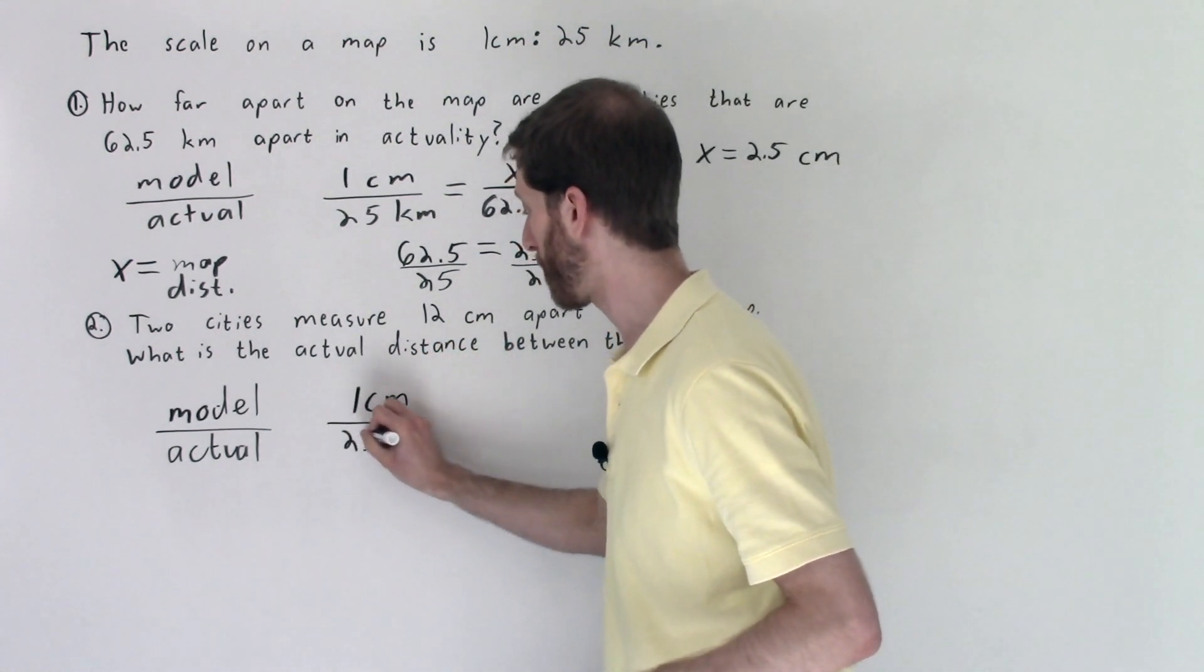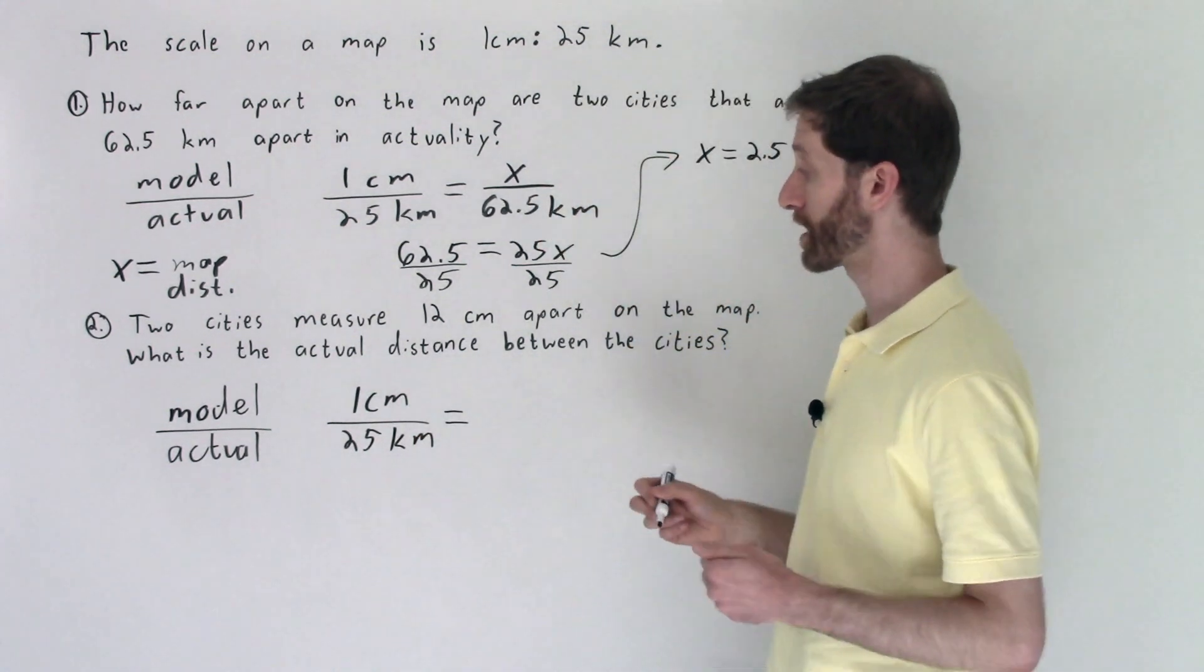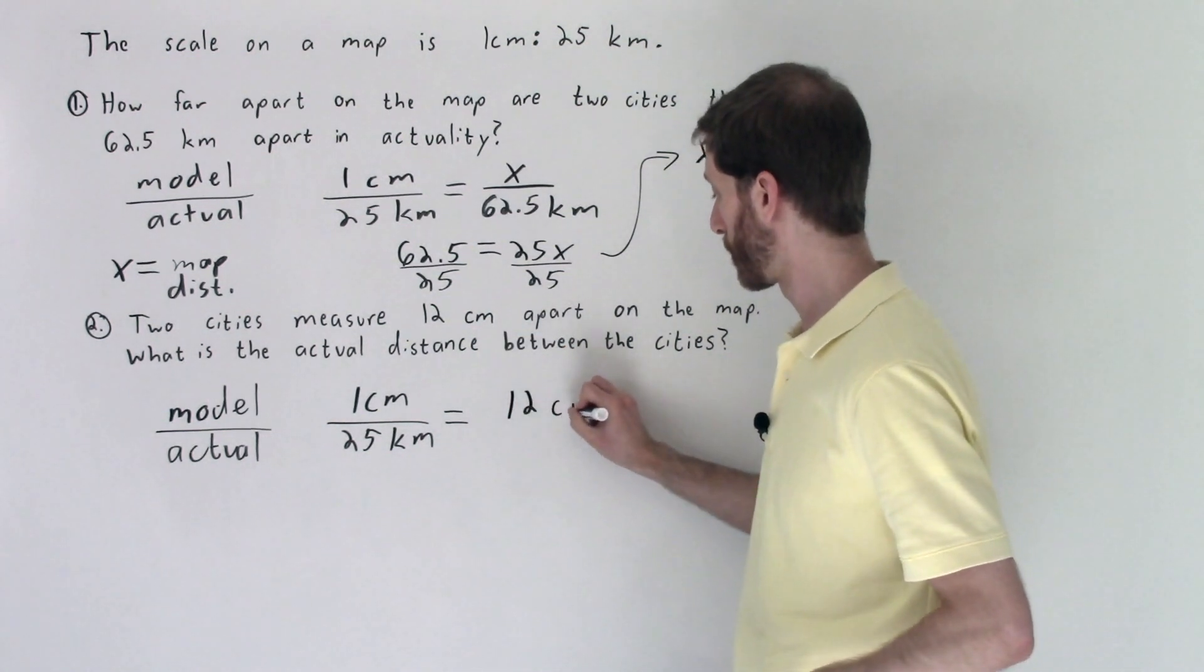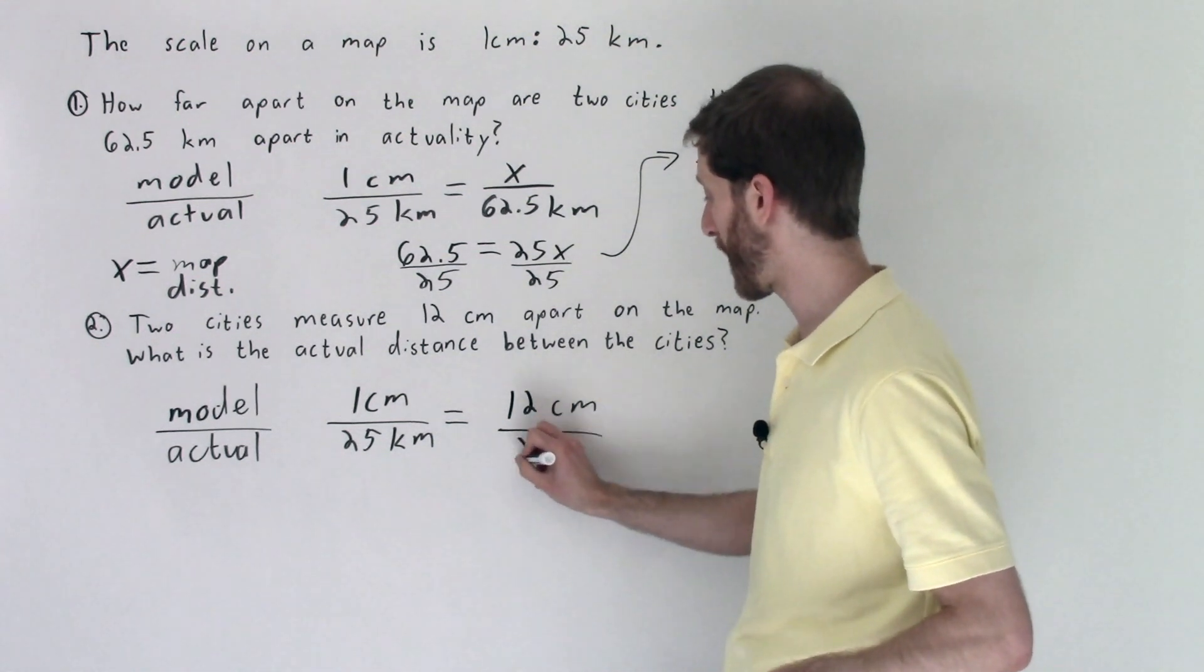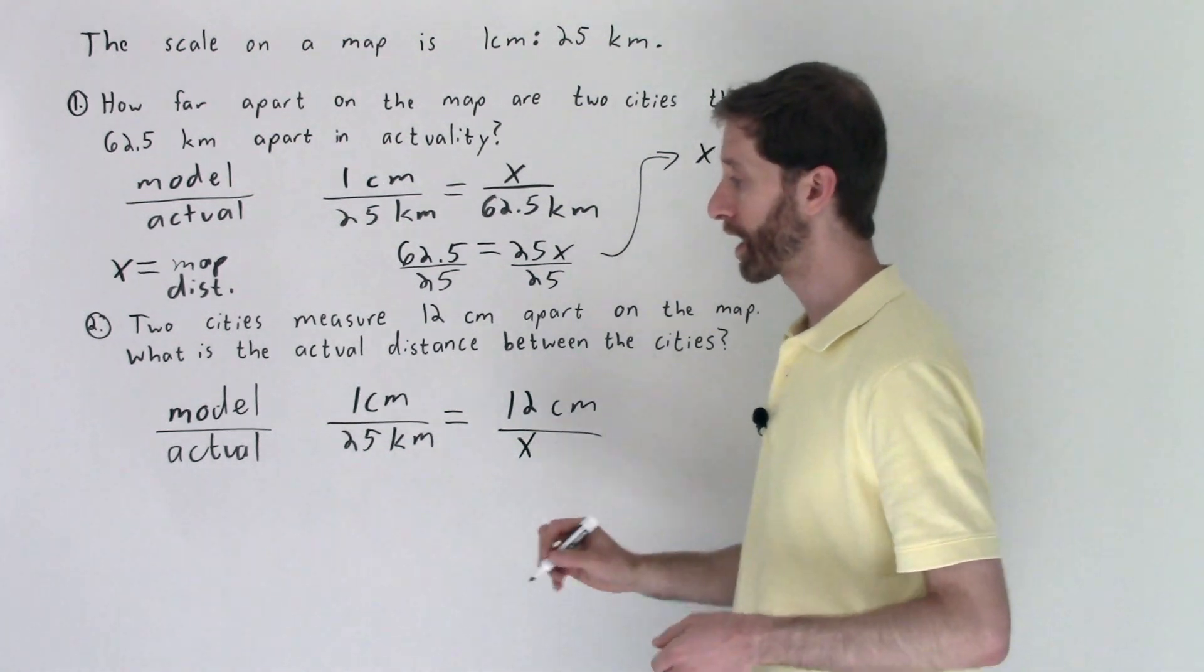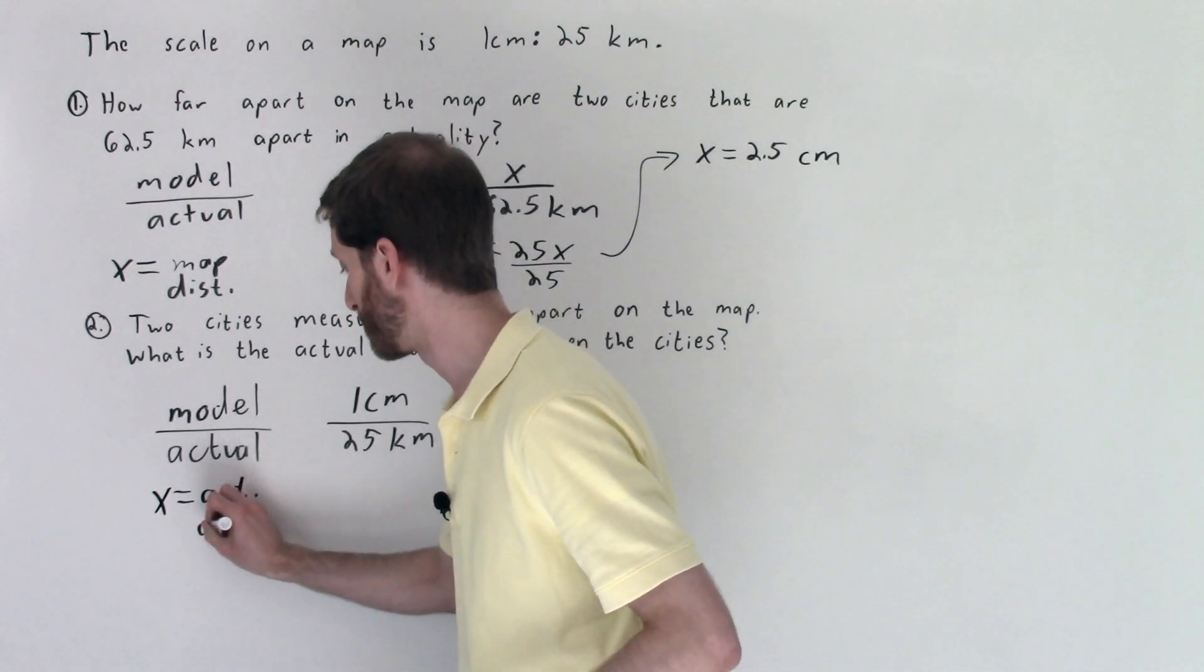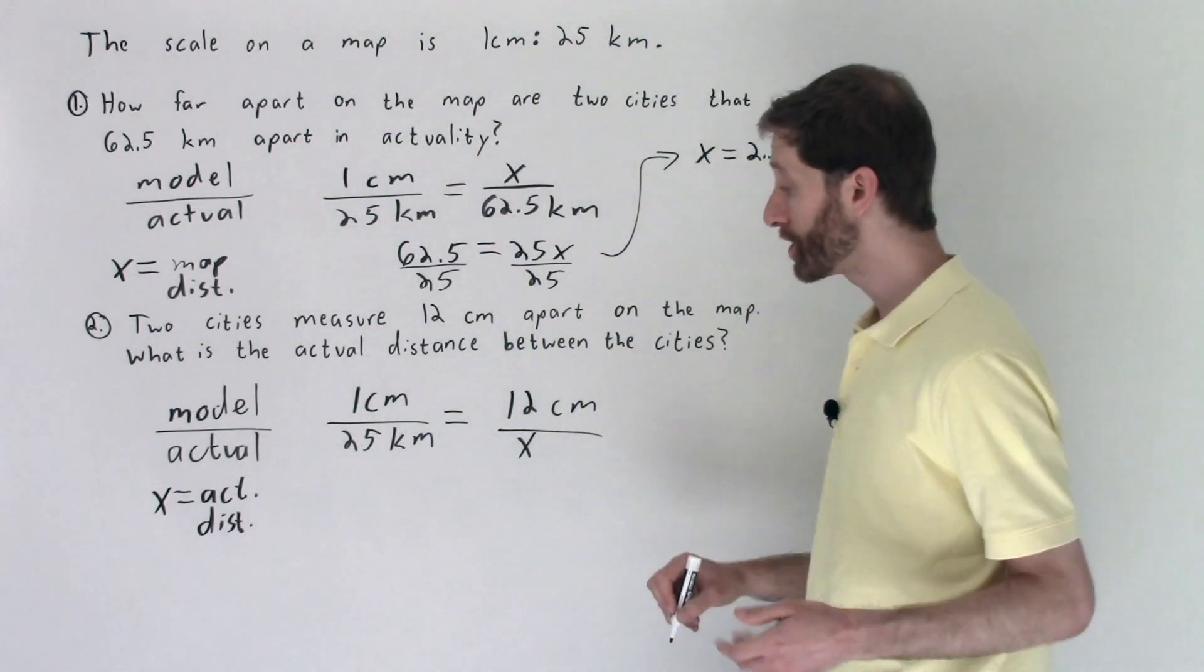We still have model to actual, so we're still comparing model to the actual amount. That's our governing idea when it comes to scales. Now with model to actual I still have one centimeter on the map to 25 kilometers in actuality. That rate will be equal to the rate of the map amount which in this case we have is now 12 centimeters compared to the actual amount which is what we want to find. So I'll call that x. That x would be in kilometers.